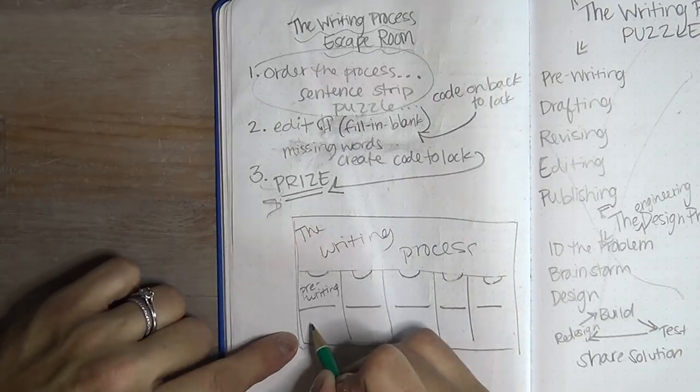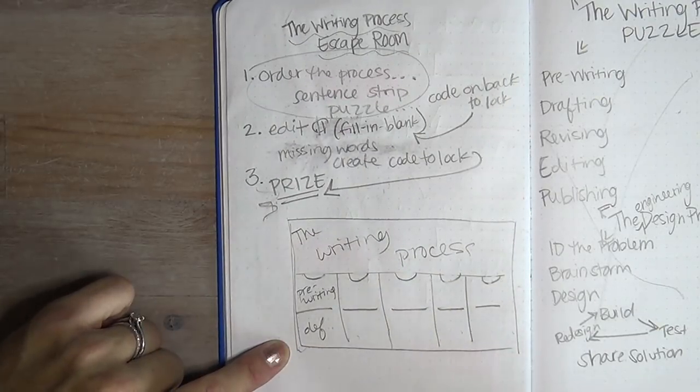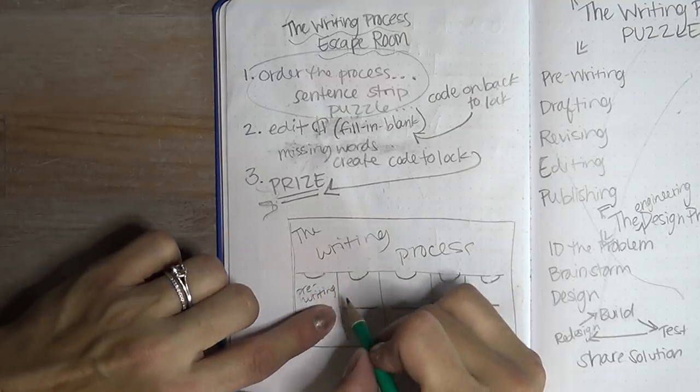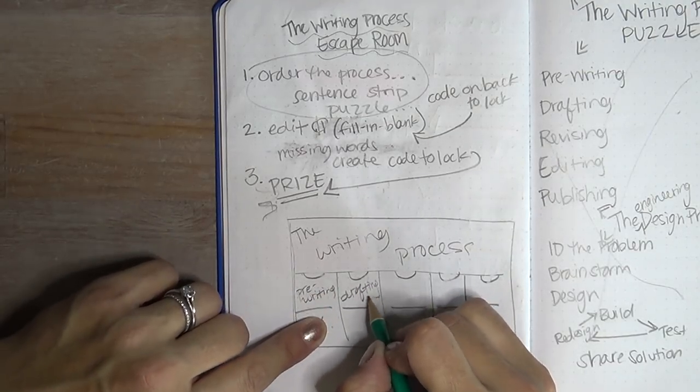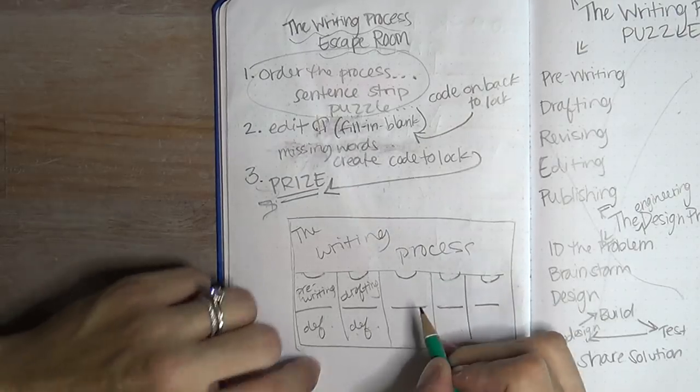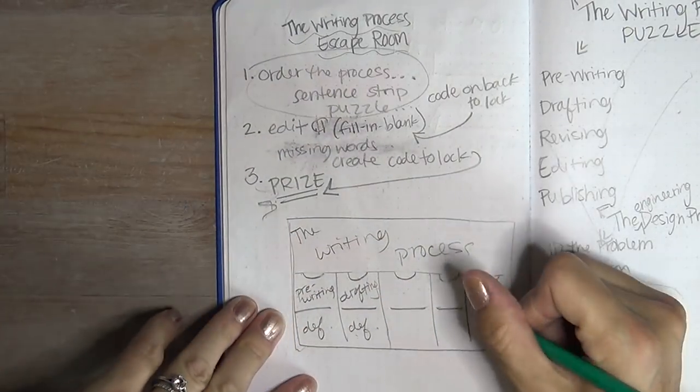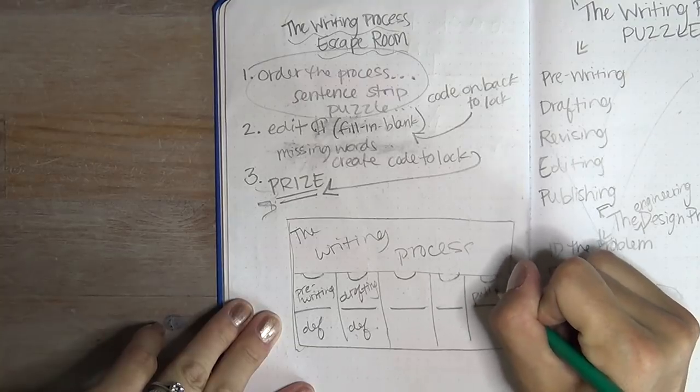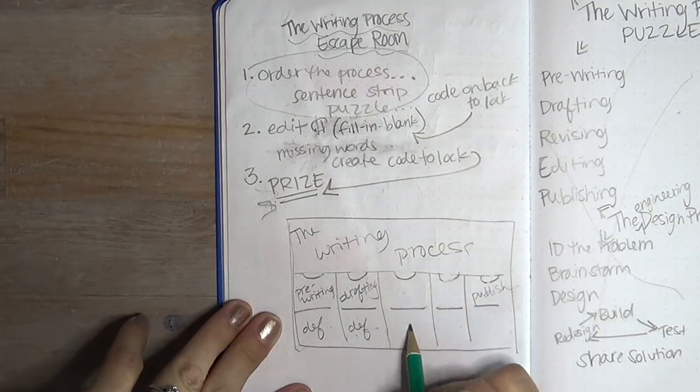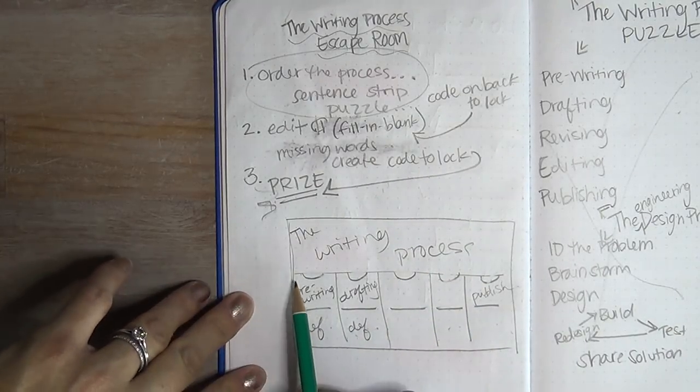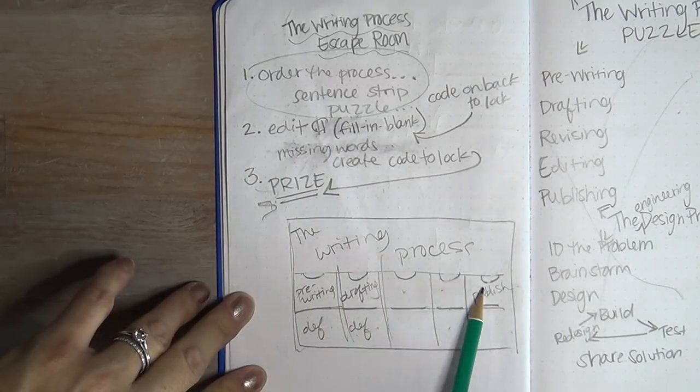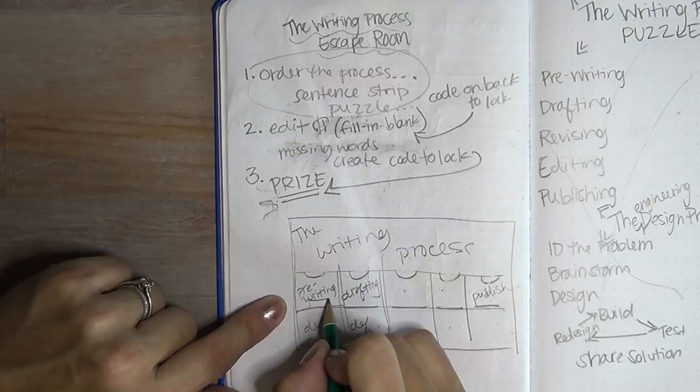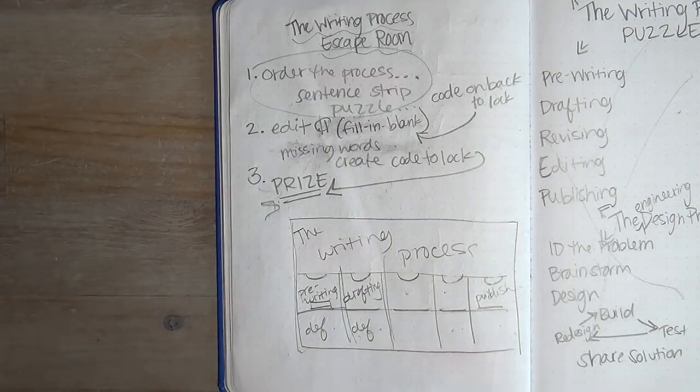These are all going to get cut apart. So you would cut along there. It kind of looks like a puzzle, but it really doesn't matter if the notches are there. Basically kids have to get these things in order. So then this is like pre-writing. It says right here, and then down here it says the definition of pre-writing. And then here it's drafting and then the definition. And then here it goes through to publish. And these all have the definitions. So all of these will be cut out, all of these little pieces, and they'll have to put them in order.